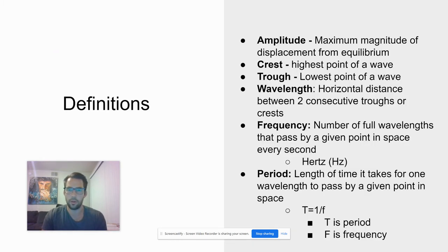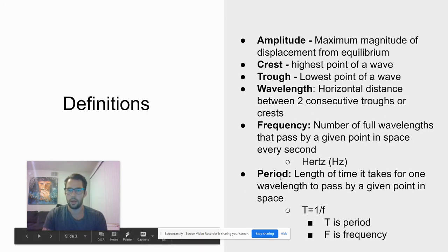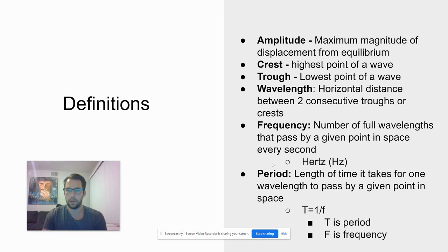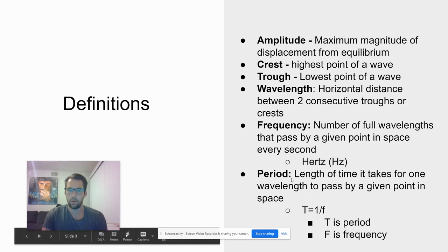And the equation, if you are given the period, you can find the frequency by doing one over t, or if you have the frequency, you can find the period by doing one over f. This is interchangeable here.